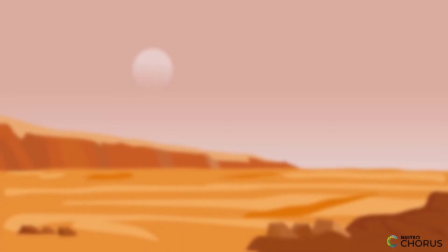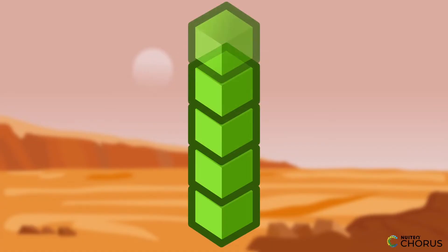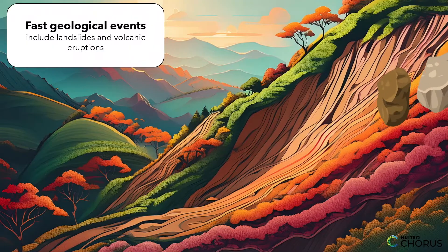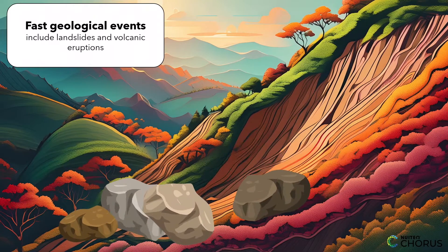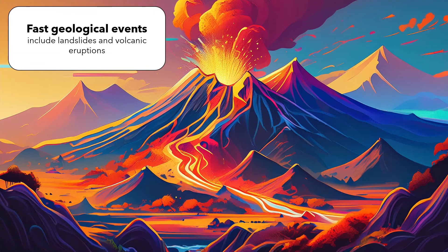On the other hand, imagine you're building a tower and all of a sudden all the blocks fall down. This is like how the Earth's surface can change quickly at small scales, like a rapid landslide or a volcanic eruption. These events can change the local landscape dramatically, but it's only a small change in the grand scheme of things.